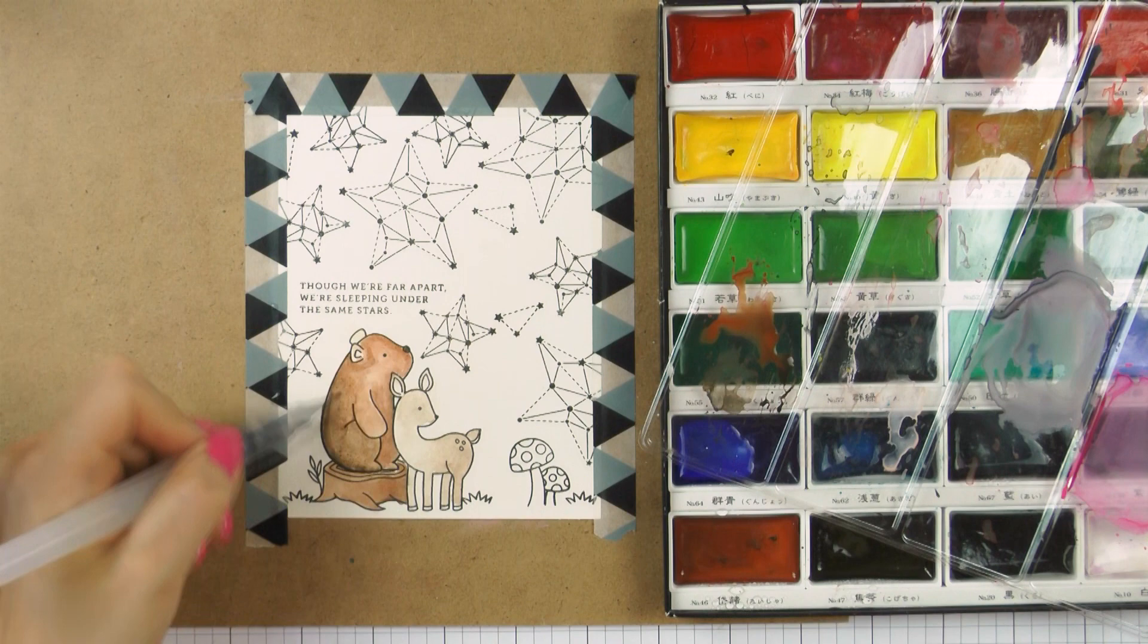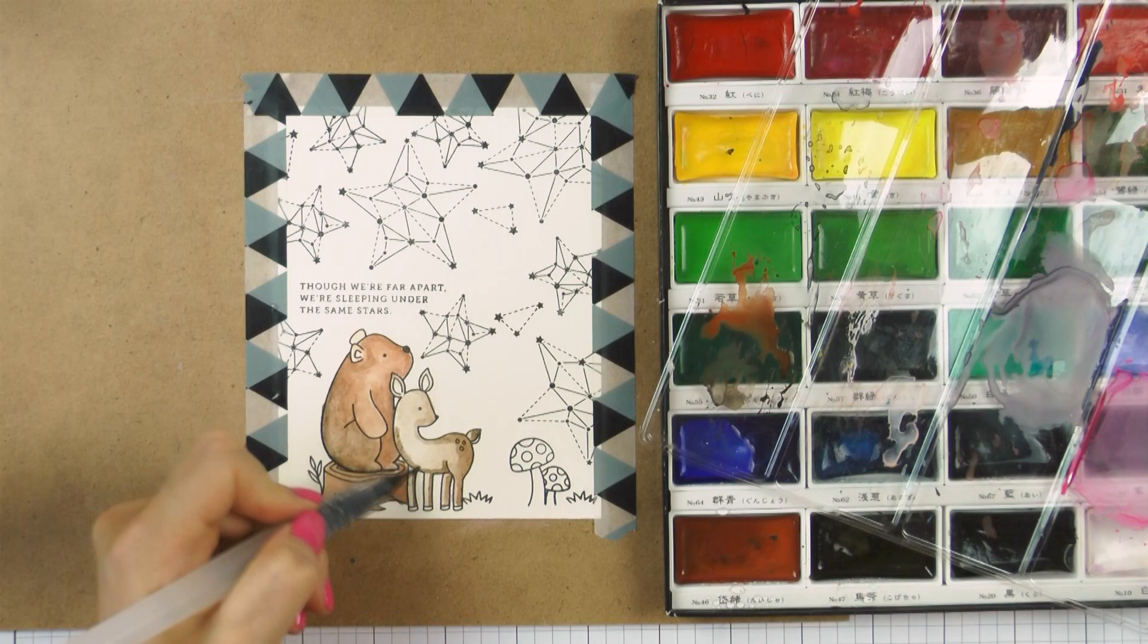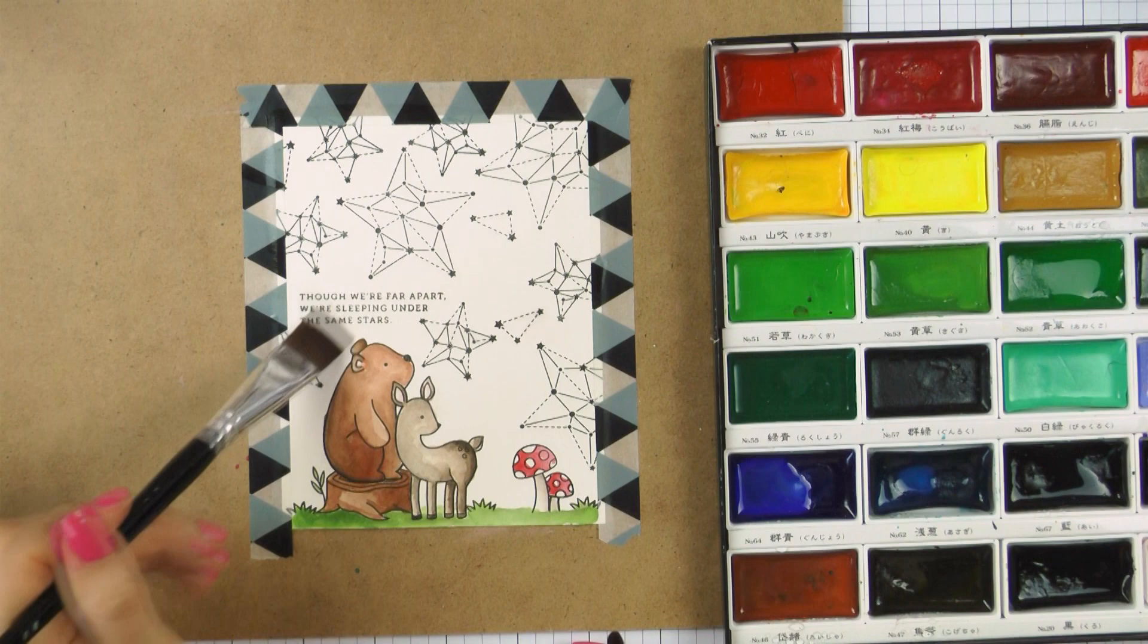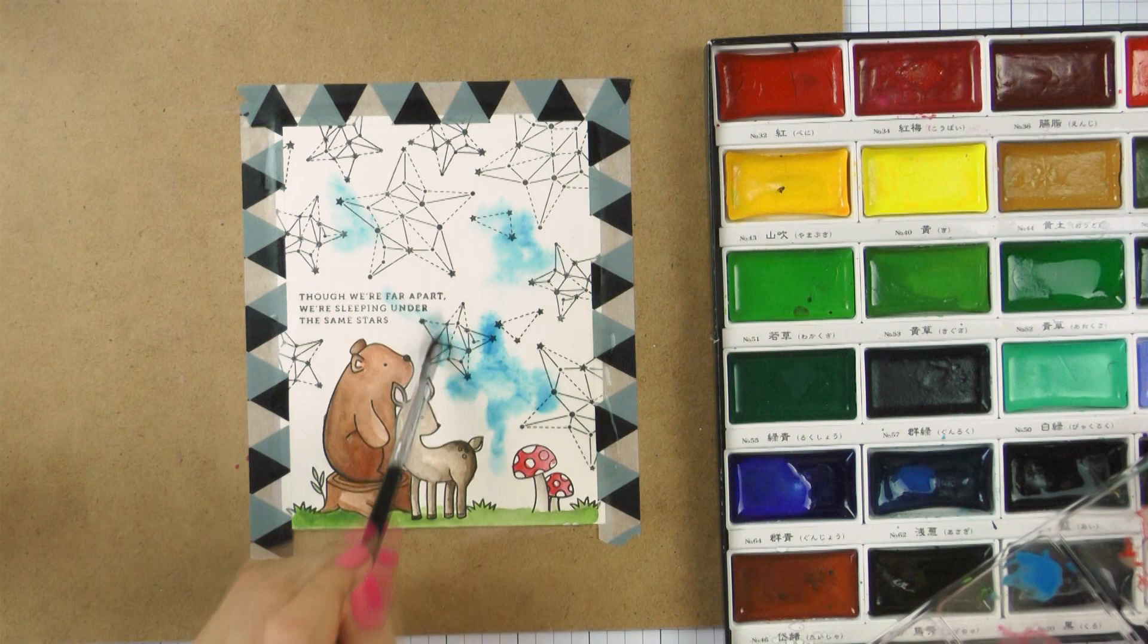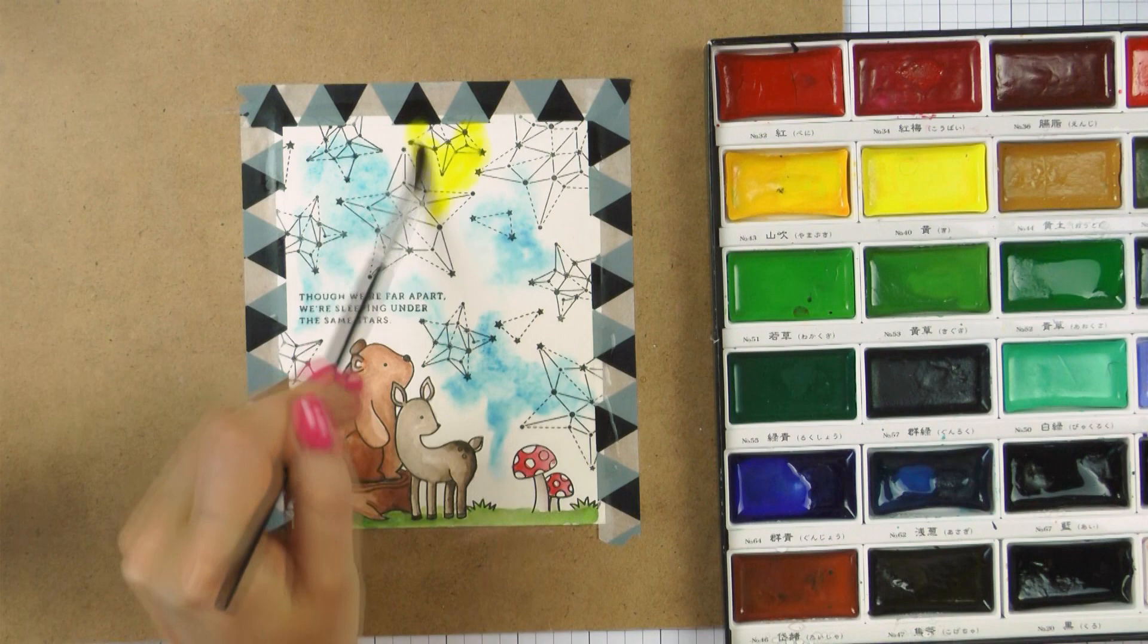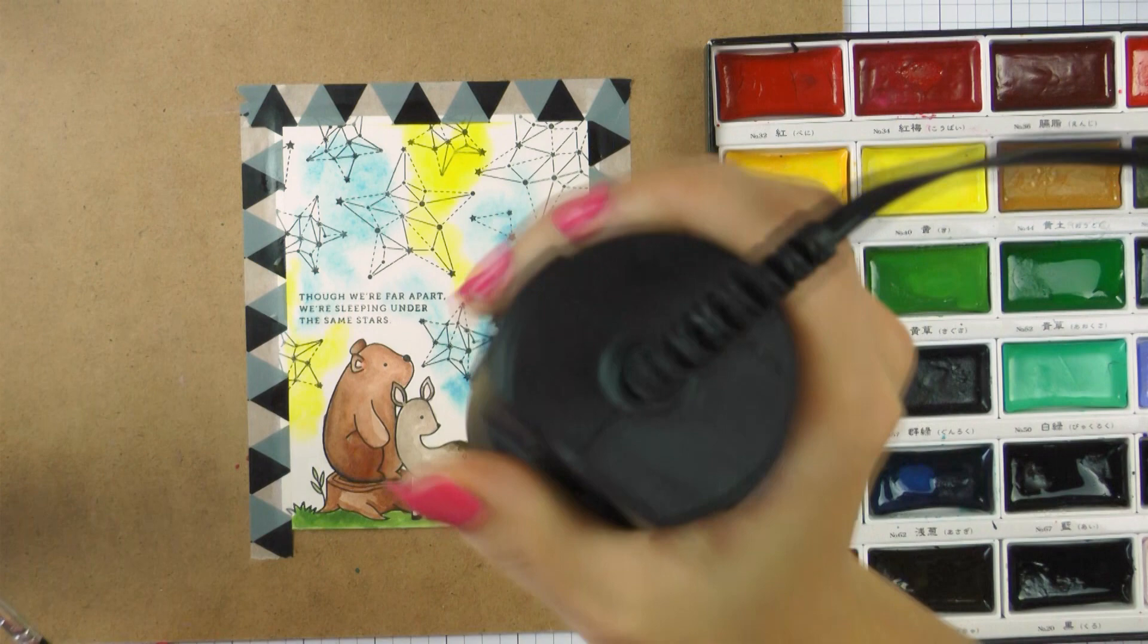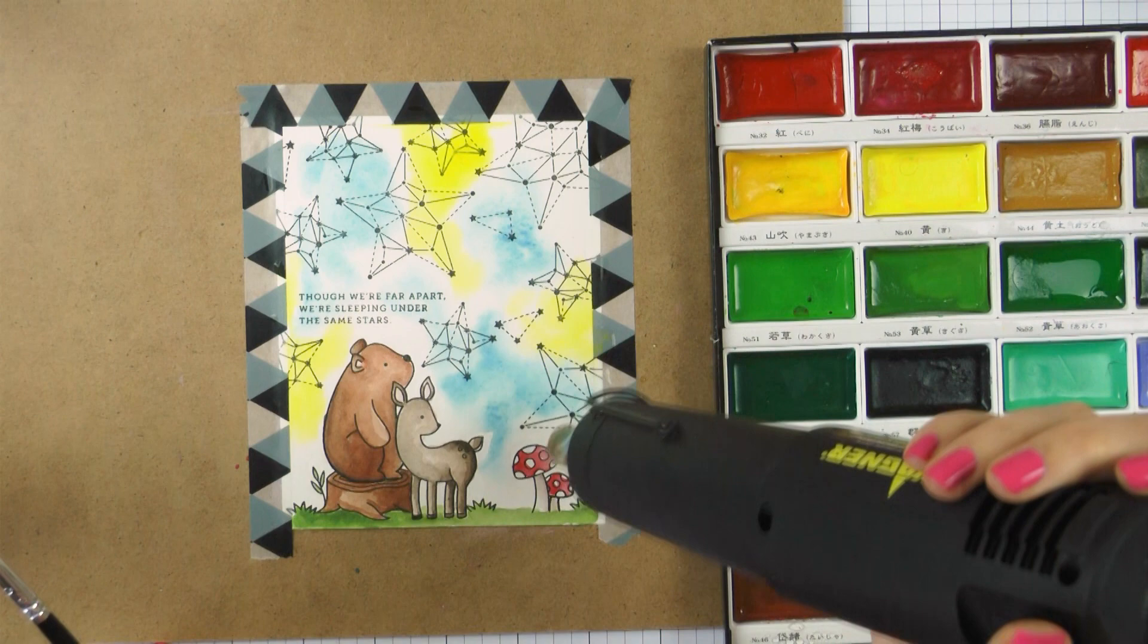After I finished coloring my critters I moved onto the background. I used a flat brush to wet my background and next switched to a round number 7 brush and started adding color here and there. I started with blue and dropped it onto my wet background and also added yellow in the same way, making sure not to mix the two together to avoid getting that green shade. Because my background was wet I didn't have to do a lot of work and the paper did all the work for me. I used my heat tool and dried this layer.